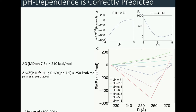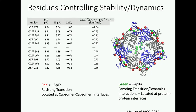Mapping these pH-dependent changes onto our original PMF computed at pH 7: as you decrease pH, you deepen the well for the expansion intermediate. As you increase pH, you flatten the landscape going from expansion intermediate to the mature Head-1 state. The free energy doesn't quite go negative, but it does flatten out. More interestingly, we can identify residues that we think are key in controlling the dynamics between these states.